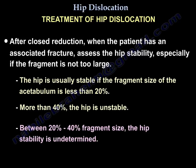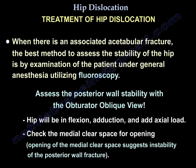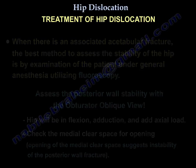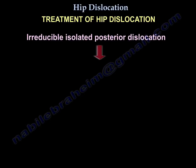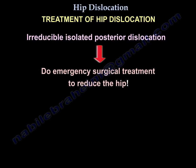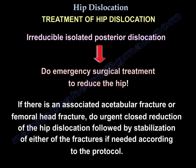Between 20 to 40% fragment size, hip stability is undetermined. When there is an associated acetabular fracture, the best method to assess hip stability is examination under general anesthesia utilizing fluoroscopy. Use the obturator oblique view — the hip will be flexed, abducted, and an axial load applied. Check the medial clearance space for opening; opening means hip instability. If there is an irreducible isolated posterior dislocation, perform emergency surgical treatment. If there is an associated acetabular or femoral hip fracture, perform urgent closed reduction followed by stabilization of the fractures as needed according to protocol.